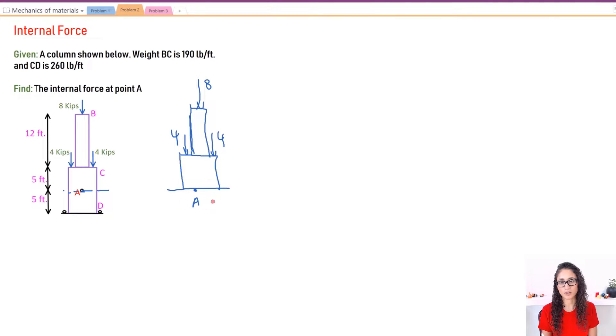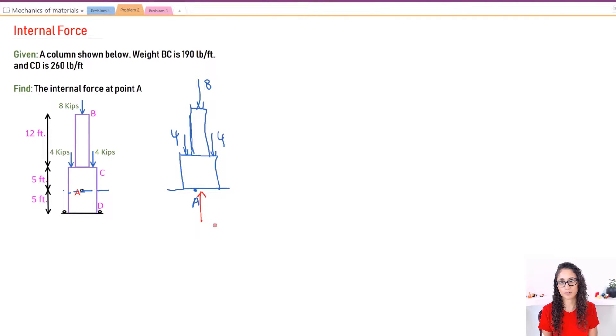Let's show the rest in red. So here I have my internal force, let's call it N, that's going at this point right here. Now I also have the weight of this column, which is weight CD. And then here I have the weight for BC. And I think we actually determined all the forces for our free body diagram.